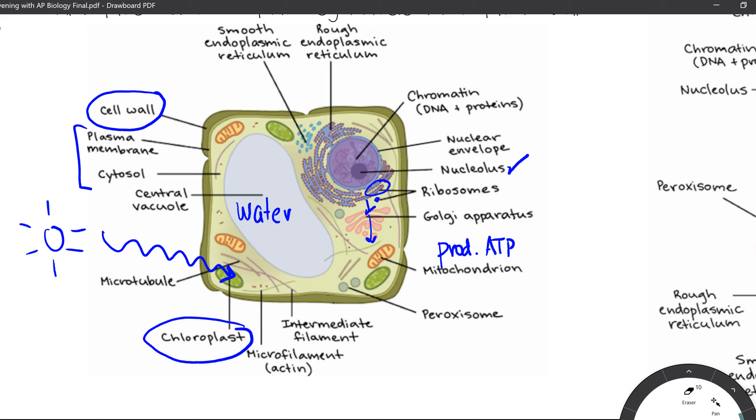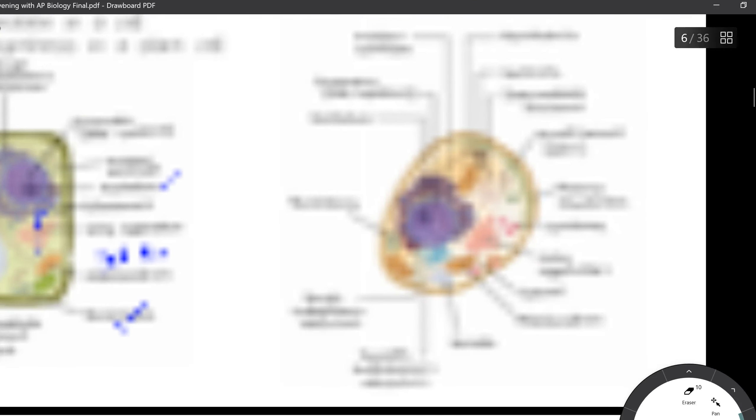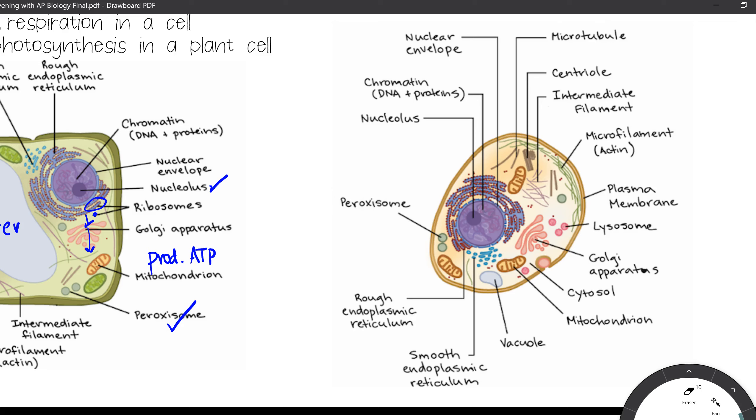Moving over to peroxisome, it's going to help break down peroxide. If you look over in the animal cell, we have many of the same things, except we do not have a cell wall, and we do not have chloroplasts. You will, however, see these things called a centriole, which will not be present in a plant cell, and it's going to help in cell division.